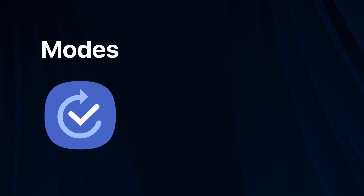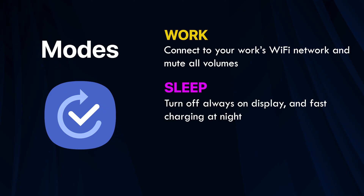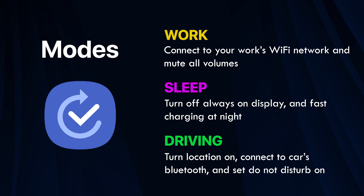Here are some ideas for other modes. You can have a work mode to connect to your work's Wi-Fi and mute all volumes. You can have a sleep mode to turn off always-on display and fast charging at night. Or maybe a driving mode to turn location on, connect to the car's Bluetooth, and set do not disturb on.